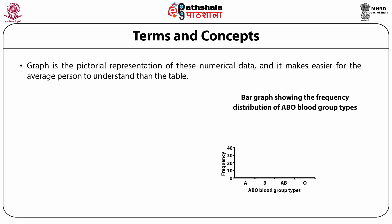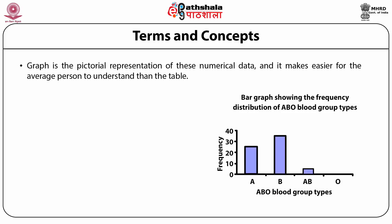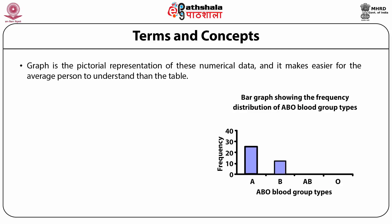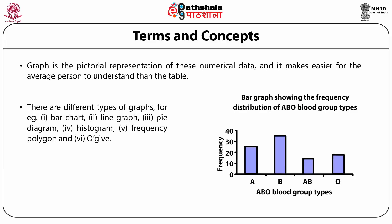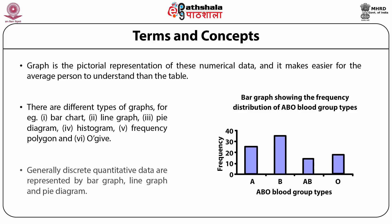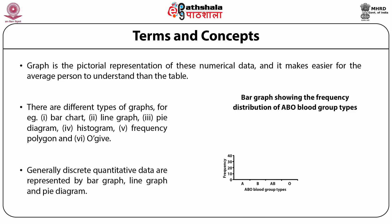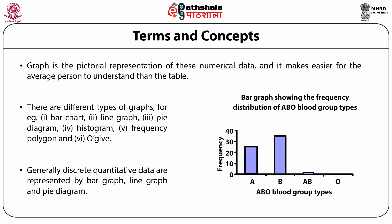A graph is the pictorial representation of numerical data and makes it easier for the average person to understand than a table. There are different types of graphs: bar chart, line graph, pie diagram, histogram, frequency polygon, etc. The choice of graph depends on the type of data. Generally, discrete quantitative data are represented by bar graphs, line graphs, and pie diagrams. In a bar graph, rectangular blocks of equal width are plotted on the x-axis, each representing an independent variable placed at equal distances from each other, as seen in this bar graph showing the frequency distribution of ABO blood group types.